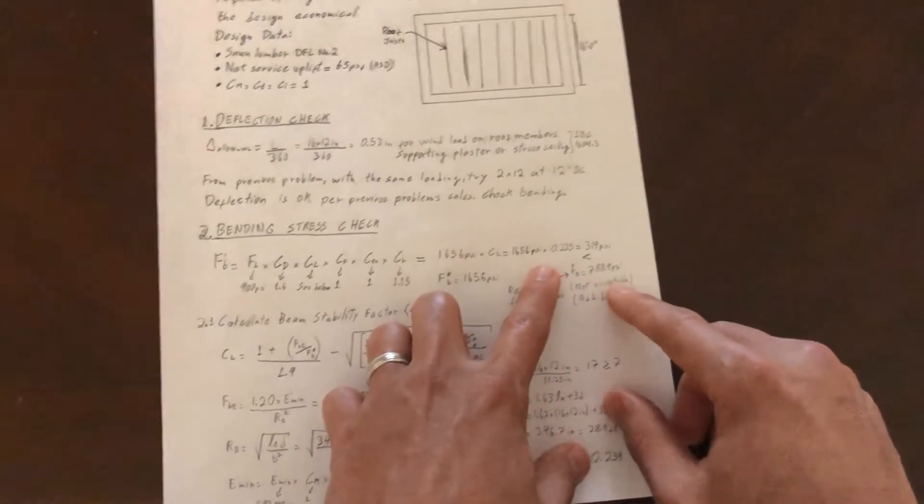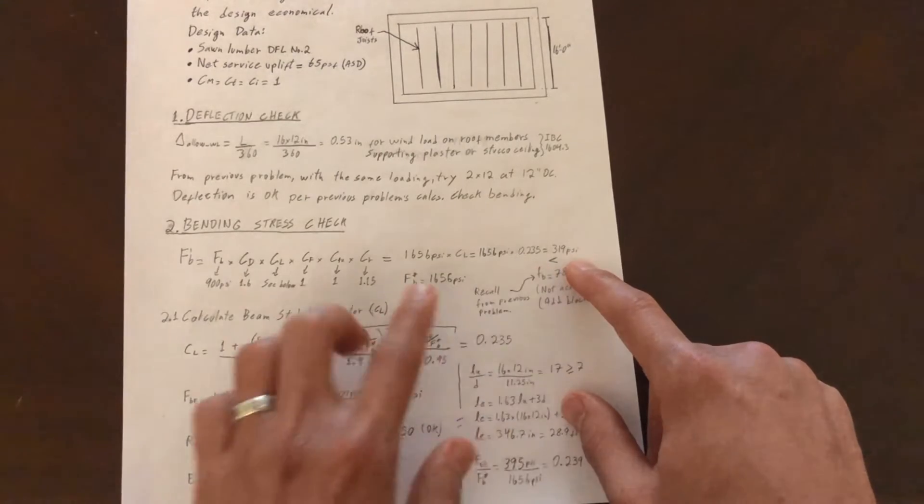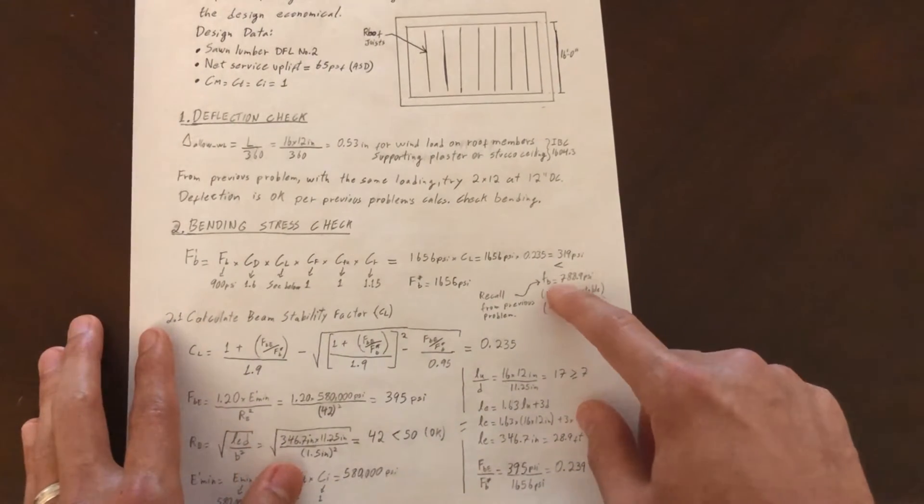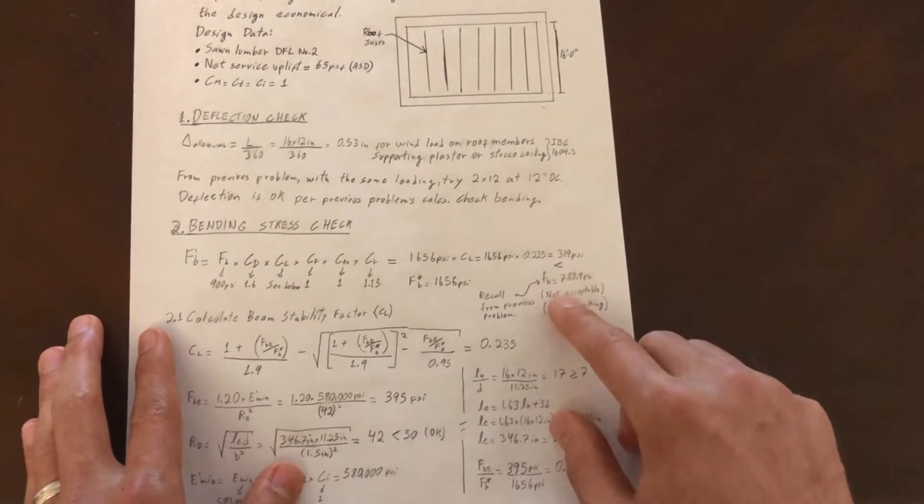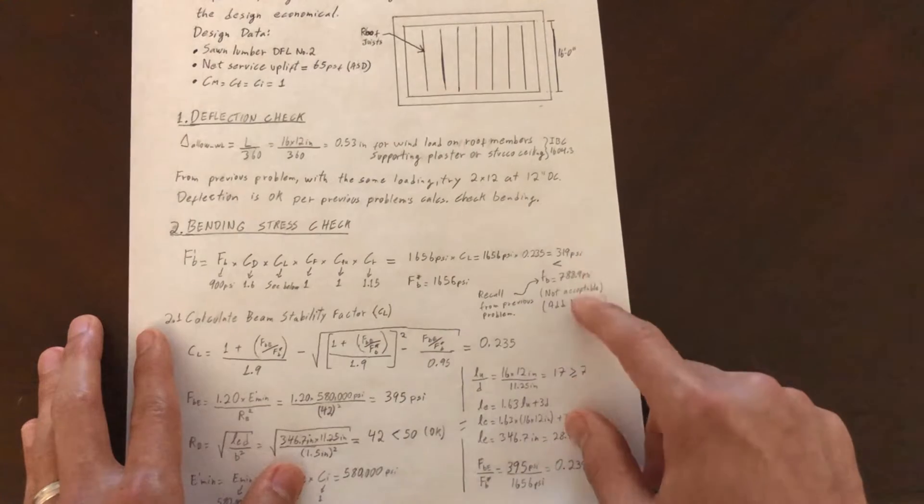That's because our members are spaced at 12 inches on center. If it's 24 inches on center or less, this factor is 1.15, as I mentioned in my previous video. Once we apply C sub L, our capacity is only 319 psi.